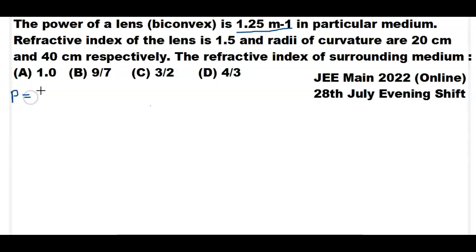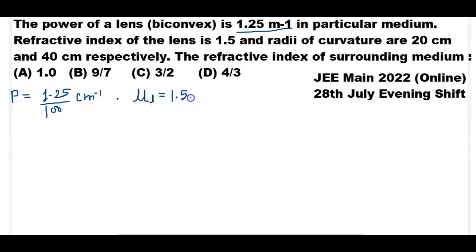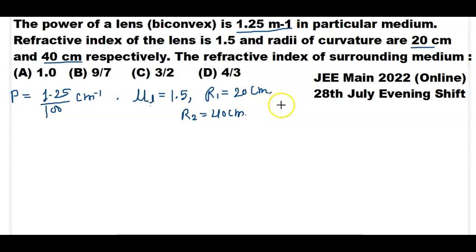Power of the lens value: if we convert it to cm, it is 1.25 divided by 100 cm inverse. Refractive index of the lens is given as 1.5. Radius of curvature: R1 = 20 cm and R2 = 40 cm. We have to calculate the surrounding medium's refractive index, which we denote as μm.